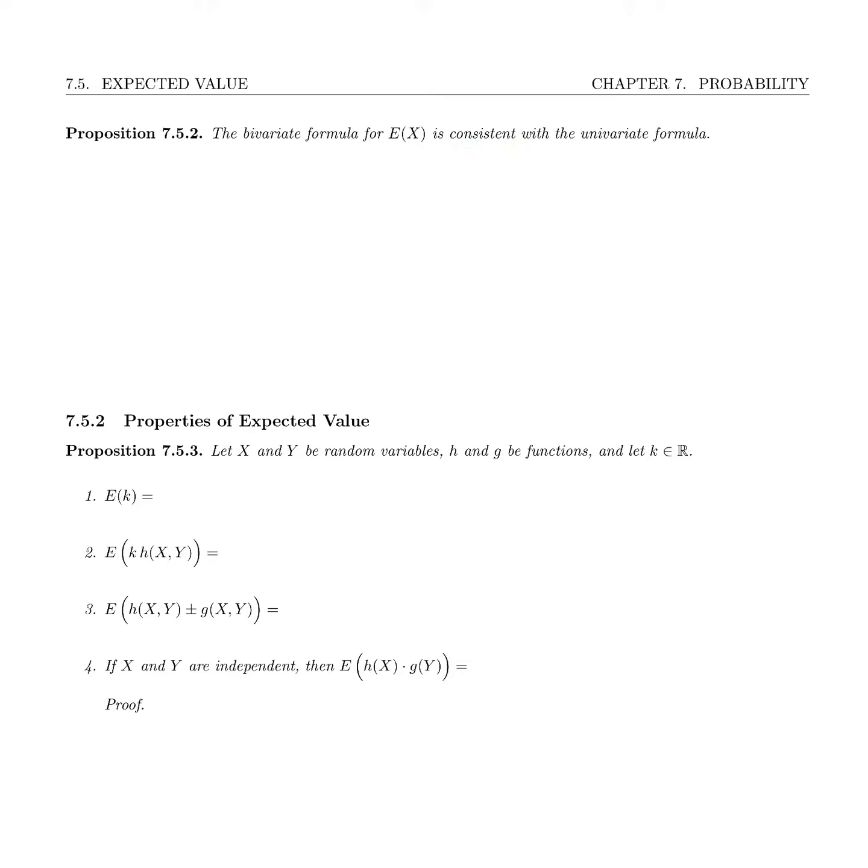In the previous example we had done the expected value of x which was a jointly distributed continuous random variable, so let's look at that case. And we had said that that's x times f of xy dy dx.